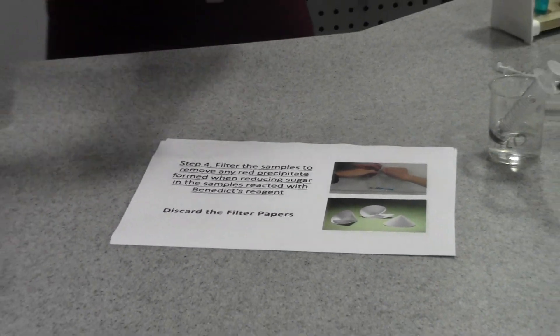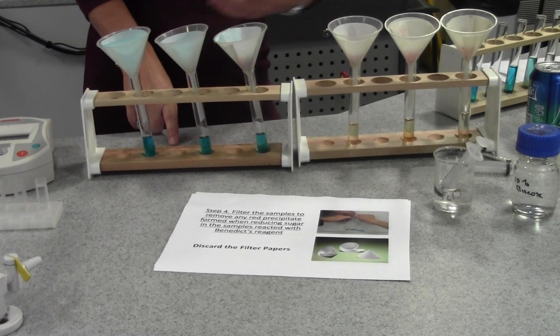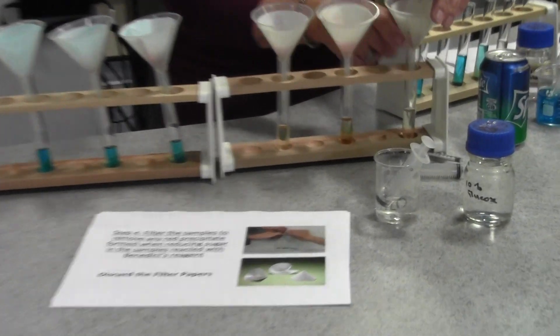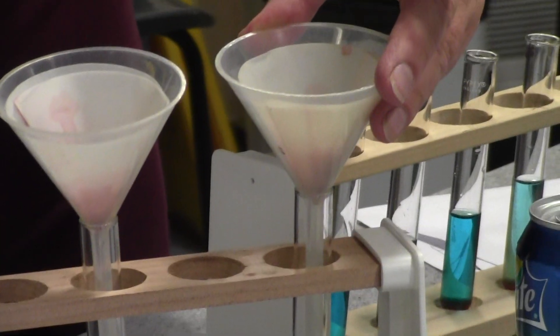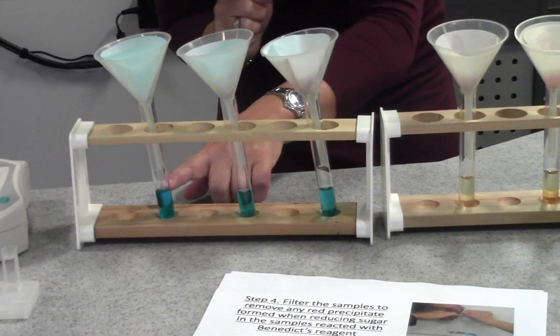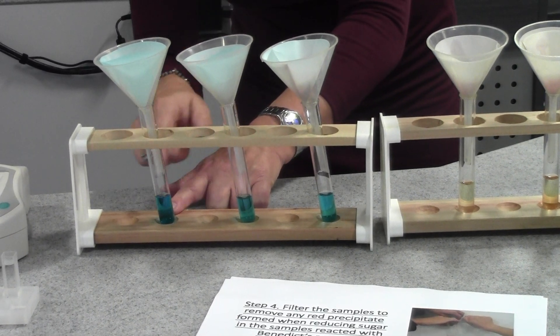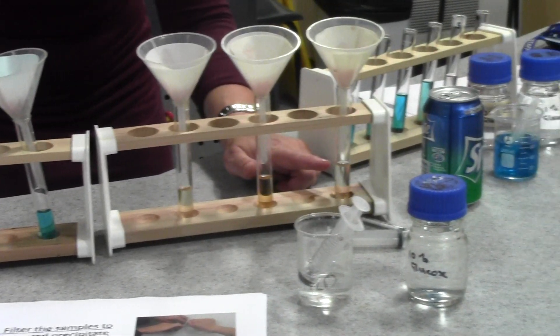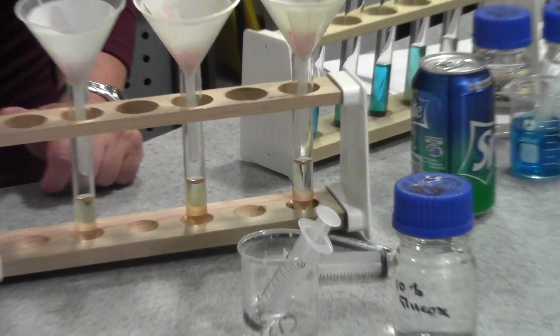I've already done that earlier, and this is our range of solutions—the results of the Benedict's test once we've filtered them. You can actually clearly see here that the solution that had the highest concentration of glucose has a large amount of red precipitate that's collected in the filter paper there. If we look at the colors of the solutions, you can see there's a range from blue here that looks like the original Benedict's—because the Benedict's has not been used up because there was no glucose to react with—right the way through to the other end where all of the Benedict's reagent has reacted with the glucose to produce precipitate, and so we've got no blueness left.